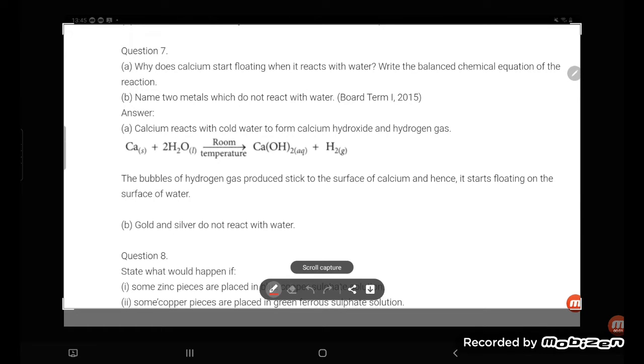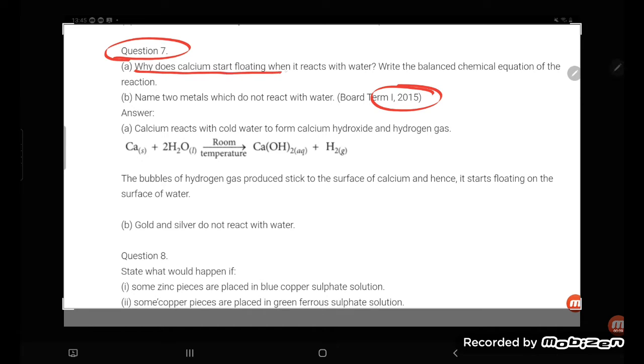Hello students, let's try to understand one more problem - question number seven. This is also asked in the 2015 board exam. Why does calcium start floating when it reacts with water? Write the balanced chemical equation of the reaction.